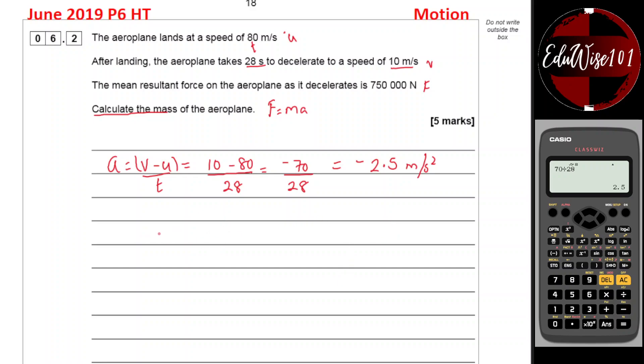Using that value in this equation, F equals ma. The mass is equal to the force divided by the acceleration. The force is 750,000 divided by 2.5. So because it's decelerating, the negative value and the acceleration also negative, so those two will cancel off eventually. 750,000 divided by 2.5, that gives me 300,000. So 300,000 kg.